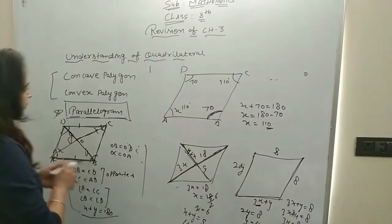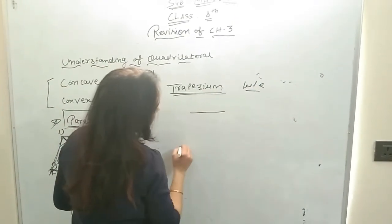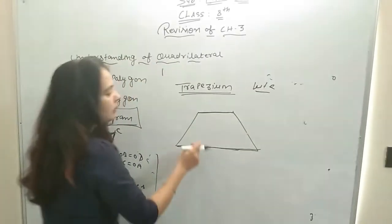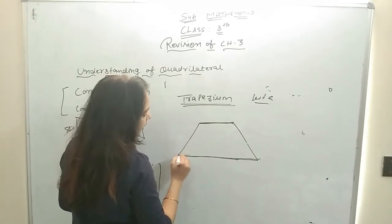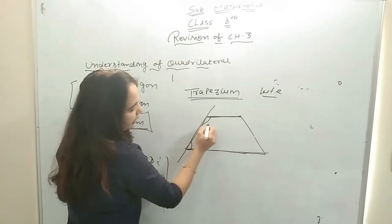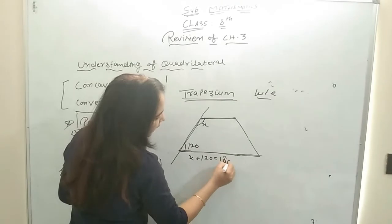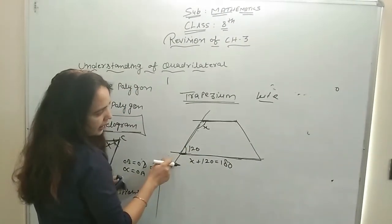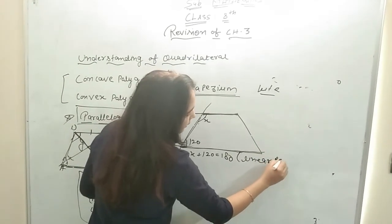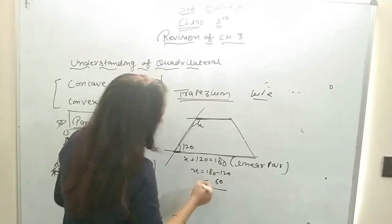One more property is given — trapezium is also given, its property and shape. For a kite as well. In a trapezium, one pair of sides is parallel. From class 7, we studied that if two lines are parallel and a transversal line cuts them, then the angles on one side of the transversal sum to 180°. So if angle X and angle 120° are given on the same side, then X plus 120 equals 180°, because the two lines are parallel and this is the transversal line. This gives the linear pair. So X equals 180 minus 120, which is 60°.